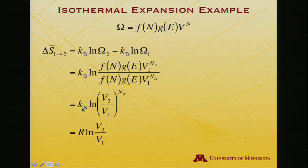I'm left with log V_2 over V_1 to Avogadro's number power. It's a log. I can take that power out front. Boltzmann's constant times Avogadro's number is R. I get R log V_2 over V_1. So this just emphasizes that simplification came because there's no change in number and it's isothermal, so no change in energy.